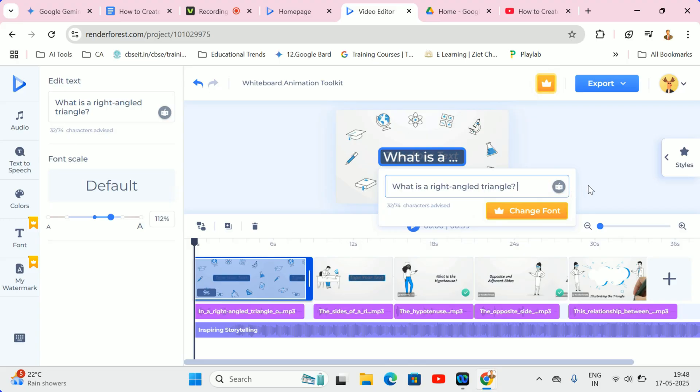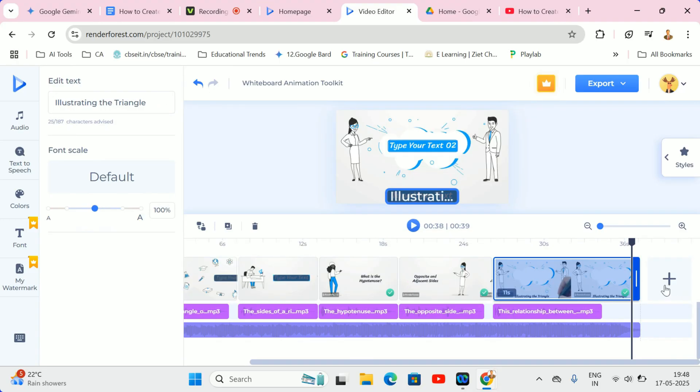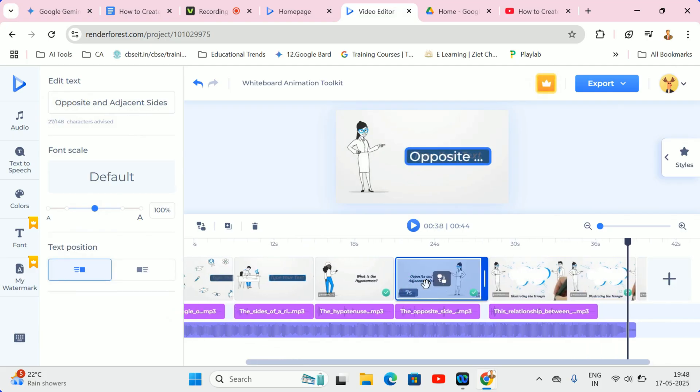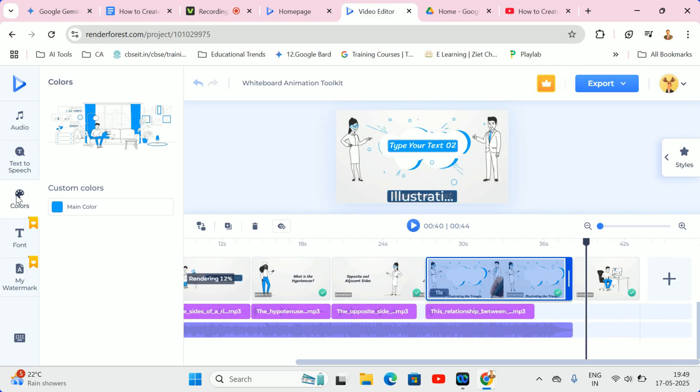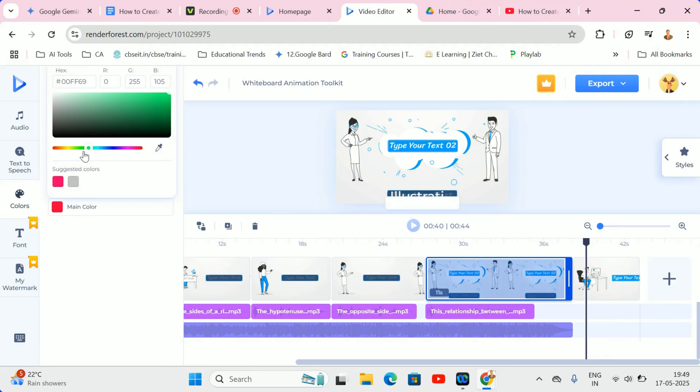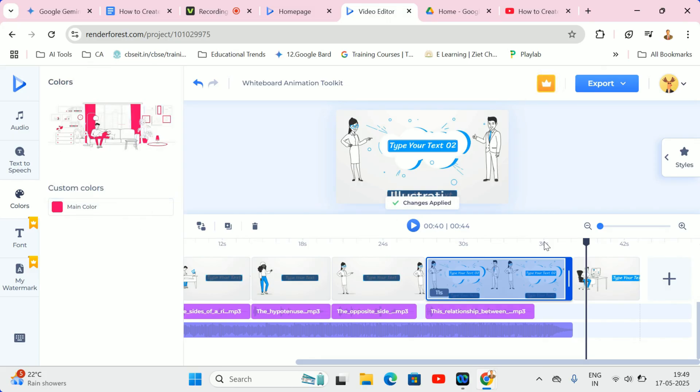To add or remove scenes, click the plus button to insert new ones, or click and drag scenes to rearrange their order in your video. Lastly, you can adjust the colors of your animation to align with your branding or choose a color scheme that's suitable for your students. These straightforward steps allow you to tailor the video to your specific needs and preferences.